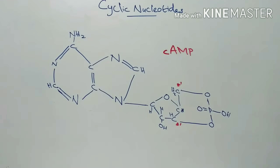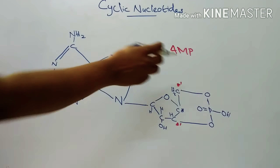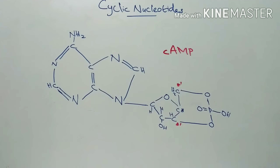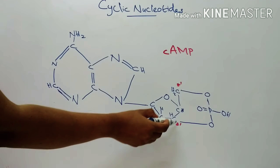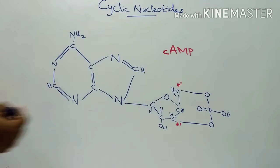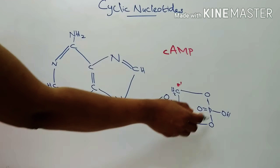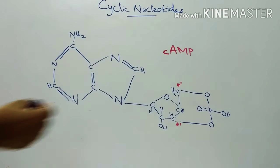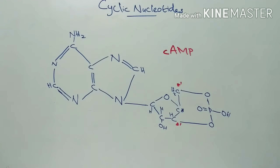This is the structure of cyclic AMP. Chemically, cyclic AMP is 3' 5' adenosine monophosphate. This is a phosphate group attached to the sugar molecule.